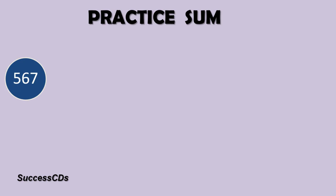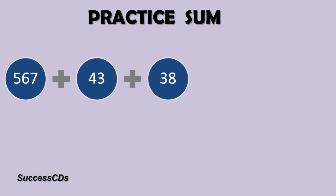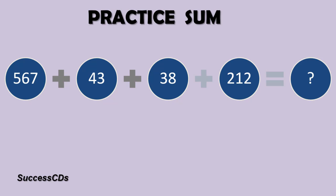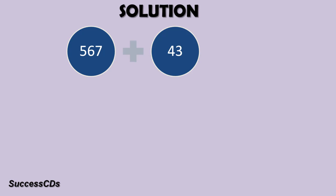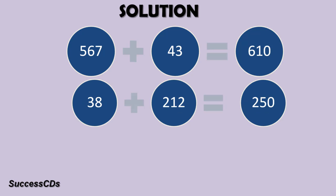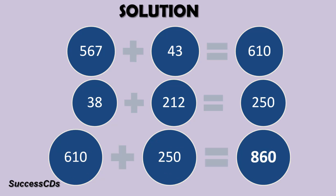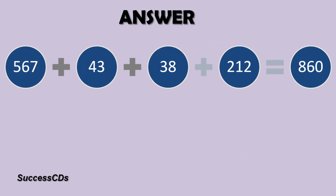Here is a sum for your practice: 567 plus 43 plus 38 plus 212. Find this answer by the pairing method. The pairs you can make are 567 and 43, and 38 and 212. The first pair, 567 plus 43, gives a total of 610. The second pair gives a total of 250. We add 610 and 250 and get the answer as 860.